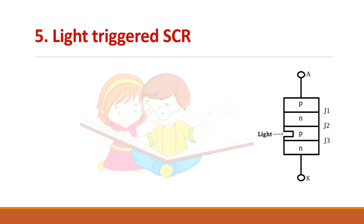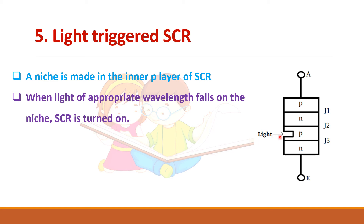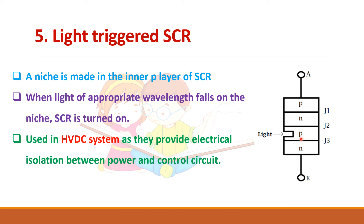The final method is the light-triggered SCR, also called light-activated SCR, in which a small niche is made in the inner P layer of the SCR. Once light falls on this area, the SCR is activated and goes into conduction mode. This type of SCR is especially used in high-voltage DC transmission systems because the voltage is very high and we can easily isolate the power circuit from the control circuit.